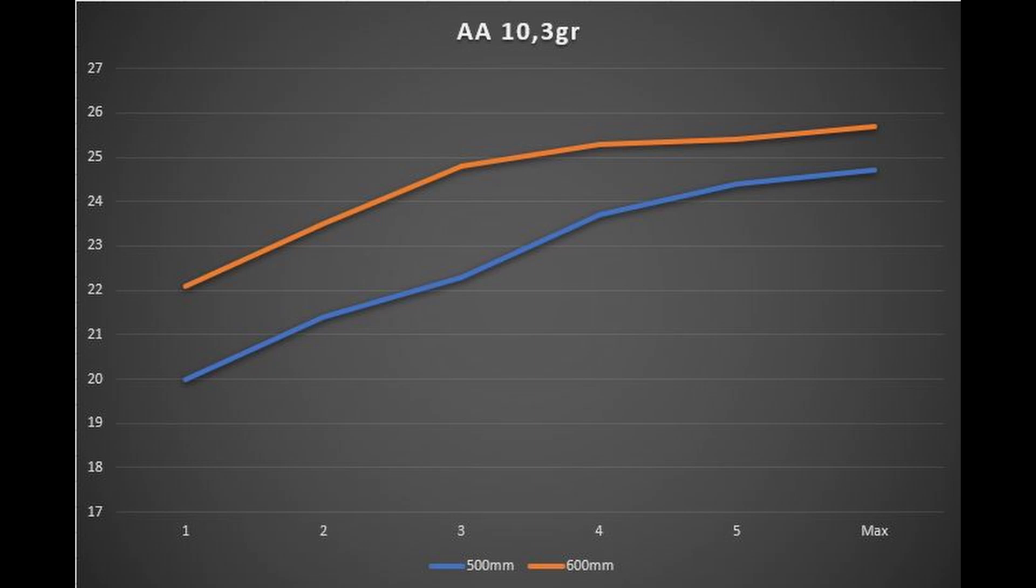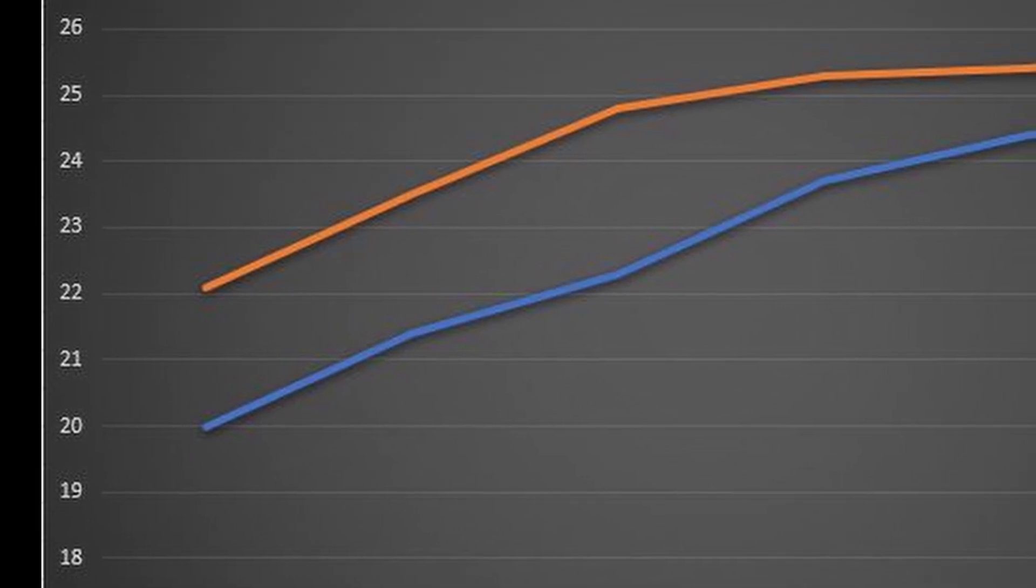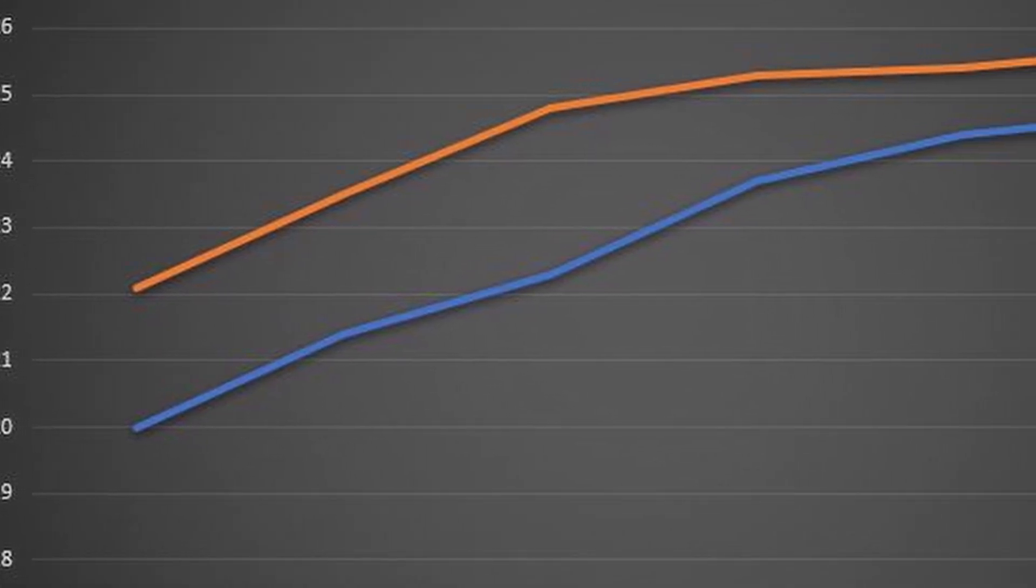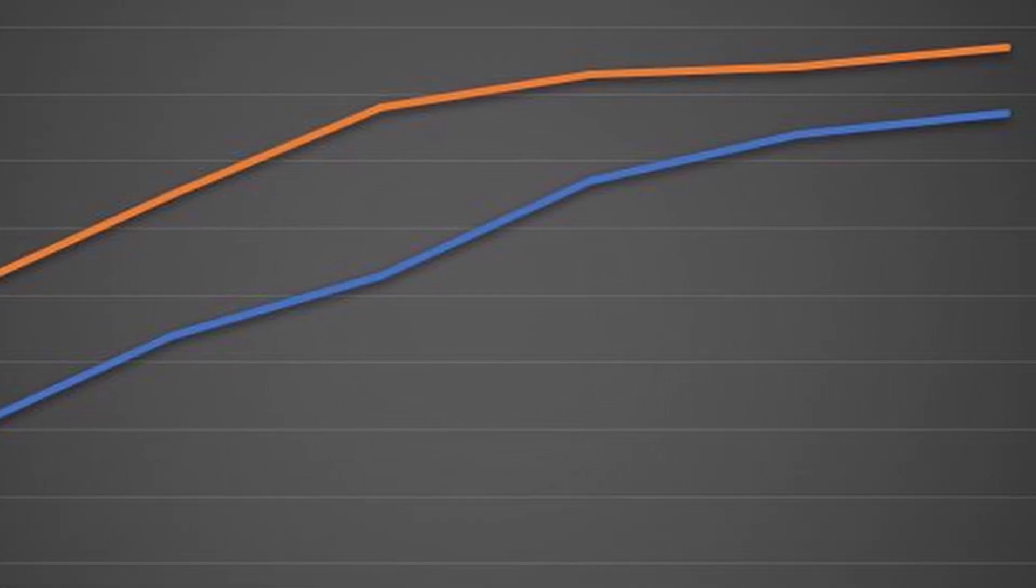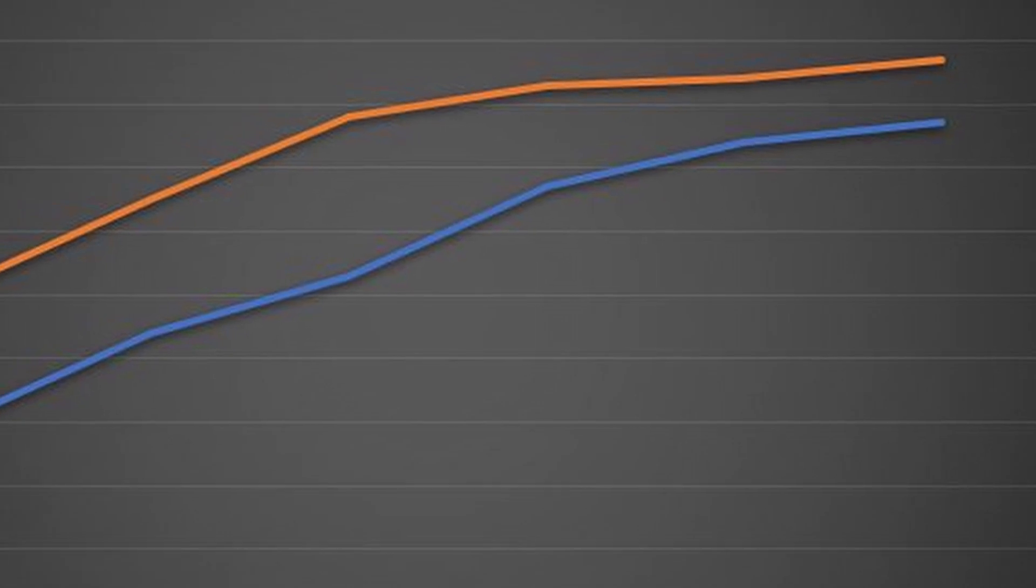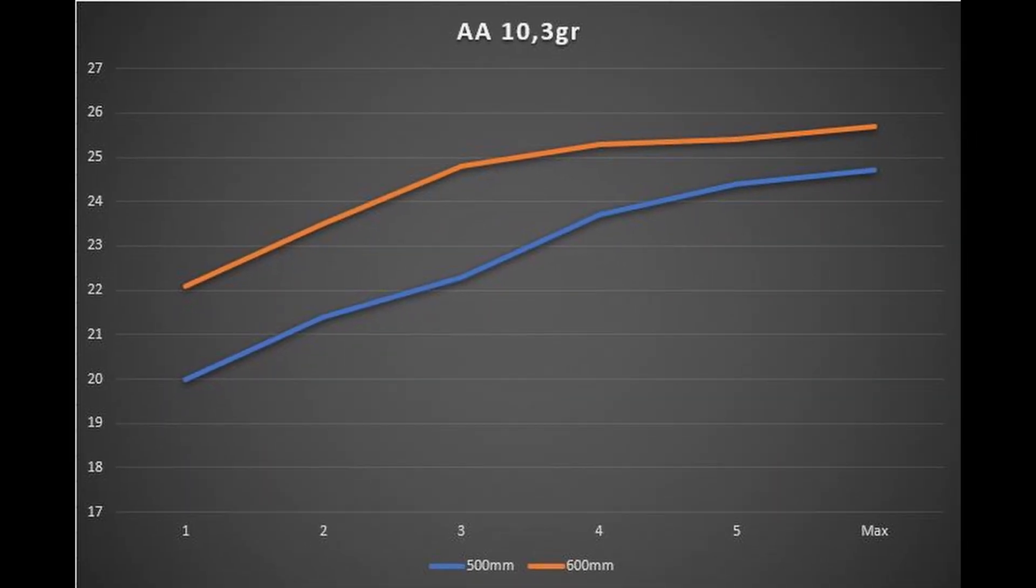One thing that is very obvious is the power difference between the two barrels. The 500 millimeter barrel runs definitely a lot slower than the 600 millimeter barrel. In the slower speeds or the power setting one, there was a two foot-pound difference between the two. But as you compress that air a little bit more up to the top end, there was only a one foot-pound difference. But still, that is a significant difference in speed between the two barrels. Myth busted.